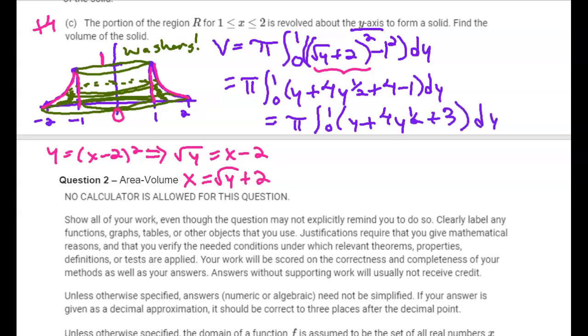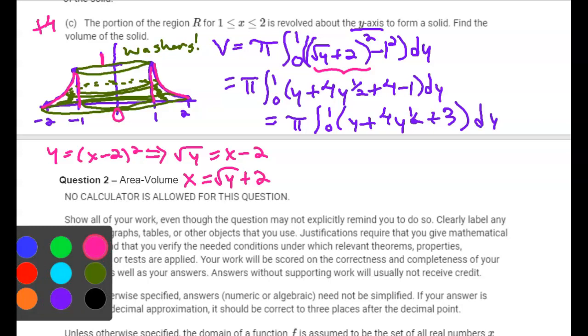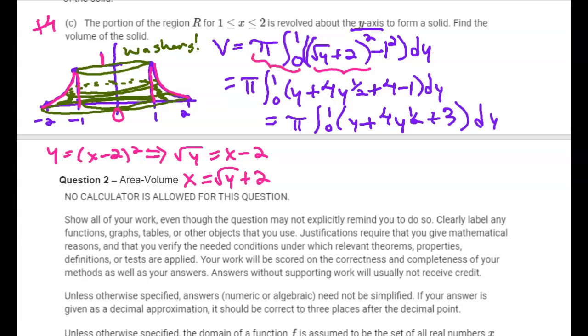Let's see if we earned any points. We got one point for the pi, that constant, and your limits of integration with respect to y. We got one point for the correct integrand. And we're going to get one point for the antiderivative.